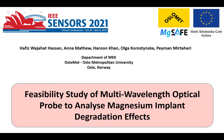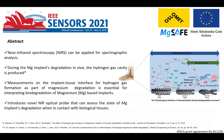This paper is about the feasibility study of a multi-wavelength optical probe to analyze magnesium implant degradation effect. Near infrared spectroscopy can be applied for spectrographic analysis. It has been reported that during the magnesium implants degradation in vivo, the hydrogen gas cavity is produced.